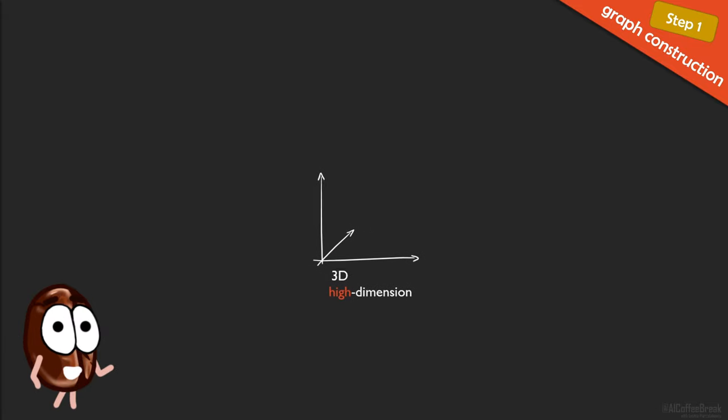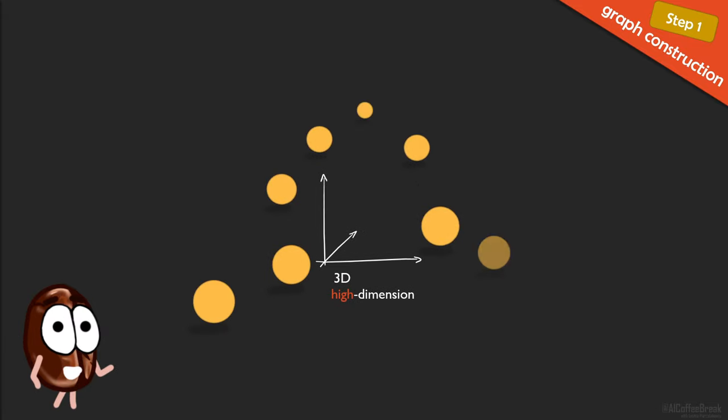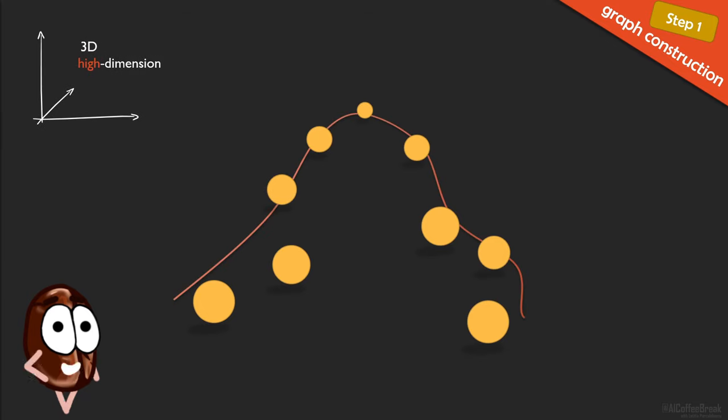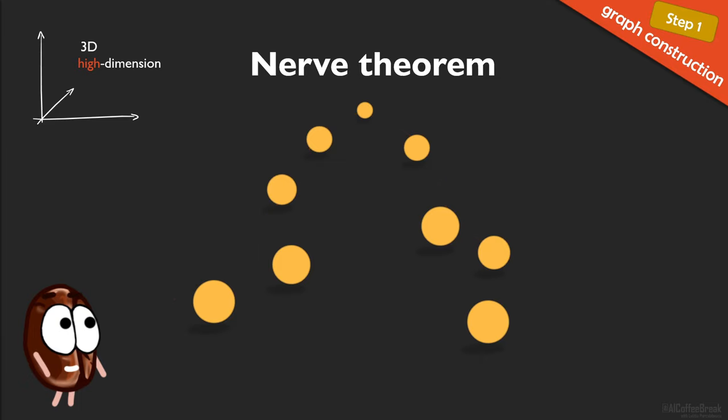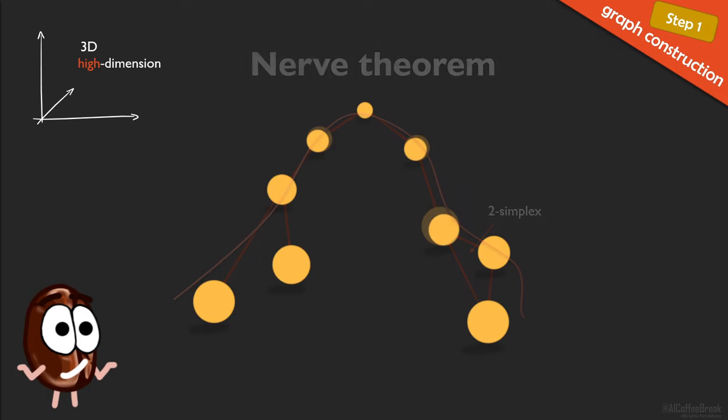So first, there was the data in the high dimensions and we want to approximate its shape or topology. Each data point is a so-called zero simplex. And a certain theorem ensures that the shape of the data can be approximated when we connect these zero simplices, which are our data points, with their neighboring data points forming one or two or higher-dimensional simplices. And with this, we can approximate the topology. So all we need to do is make these connections.